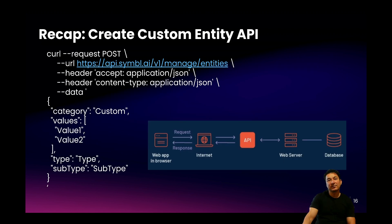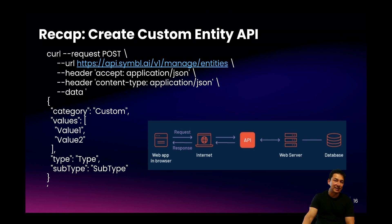As I previously mentioned, you have the ability to create your own custom entities. This is what the create function looks like for creating a custom entity. The important thing to note is that the category 'custom' is fixed and not changeable. There's a type and subtype that you can specify, as well as the actual values for this entity. As an example, you could have car versus truck as the type, the subtype could be Ford versus Honda, and the values could be F-150 or Civic.